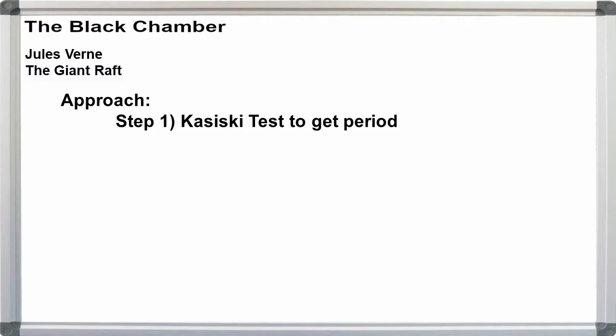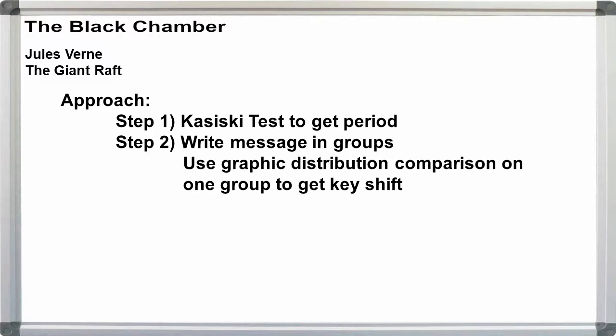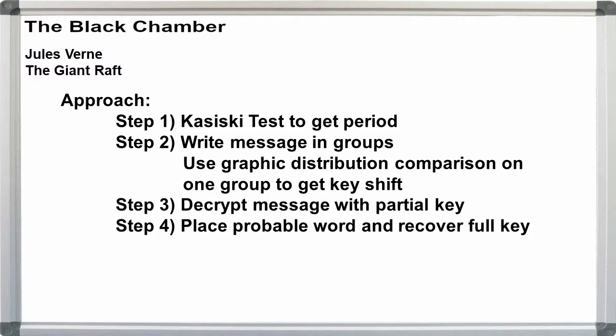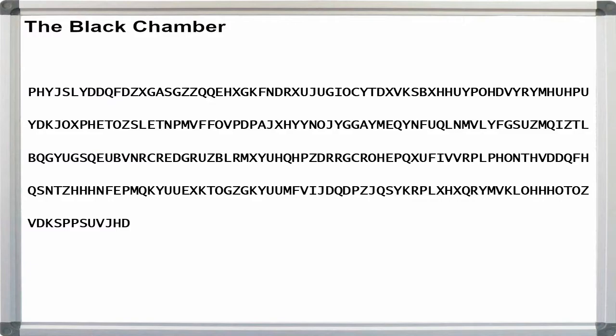In step 1, I'm going to use the Kasiski test to find the period of the cipher. In step 2, I'm going to write out the message in groups and analyze one of the groups to get the first key digit. In step 3, I will decrypt part of the message with the partial key recovered in step 2. In step 4, I'll use the plain text that comes out for placing our probable word. That should be enough to recover the complete key. Then, in the final step, we'll decrypt the full message. I hope this will all make more sense as we go along.